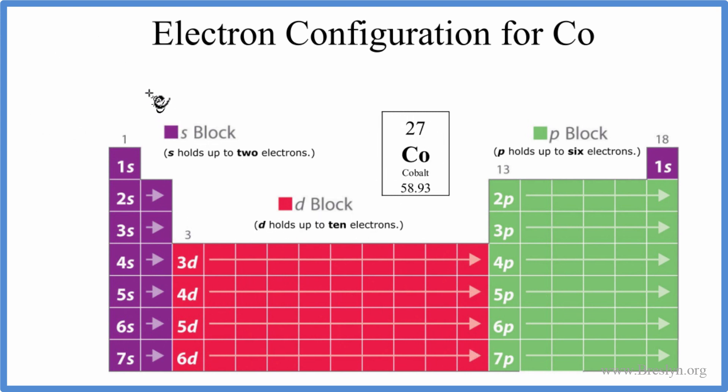We have 27 electrons, so we'll start with 1s. S orbitals can hold up to 2 electrons, we have 1s1, 1s2, so we'll put our 2 in there. Then we come over to 2s1, 2s2, we've used 4, we have a total of 27. From 2s, we go over to the 2p. The 2p can hold up to 6, so let's put 6 in there.